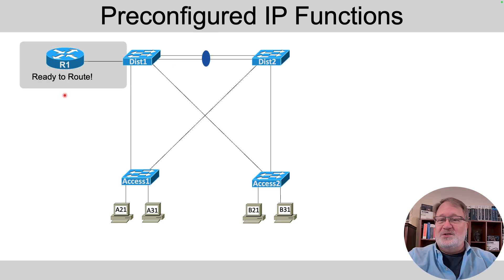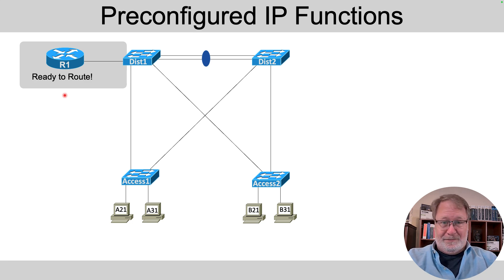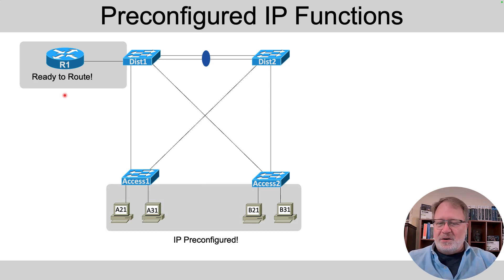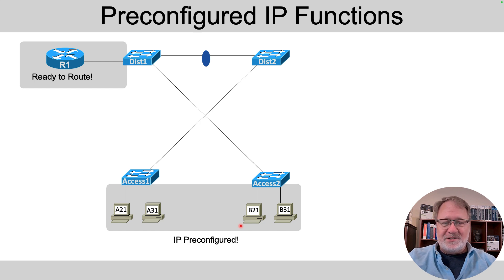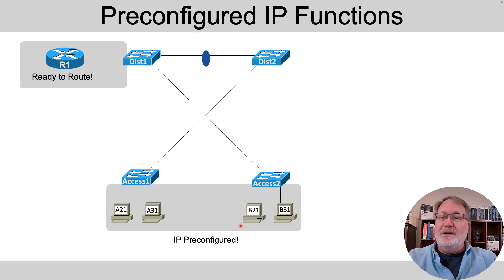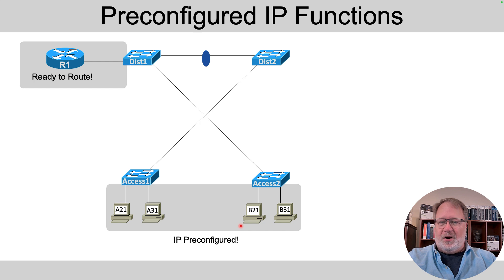Router R1 is ready to route. I've pre-configured it and I don't expect you to go figure out what it means — just take it on faith that it's configured correctly. Likewise, on the four PCs, their IP settings are pre-configured. We just haven't gotten to that in class yet. Feel free to go explore it if you'd like, but you don't need to.